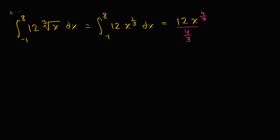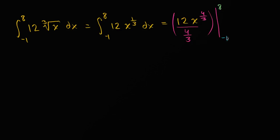Now we're going to evaluate this at the bounds. We'll evaluate it at eight and at negative one, then subtract the expression evaluated at negative one from the expression evaluated at eight.